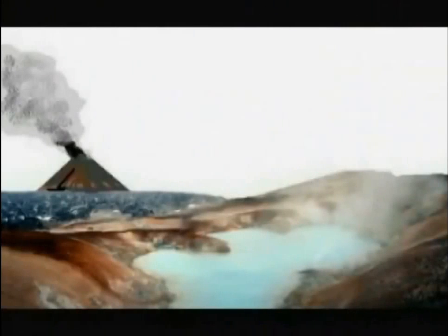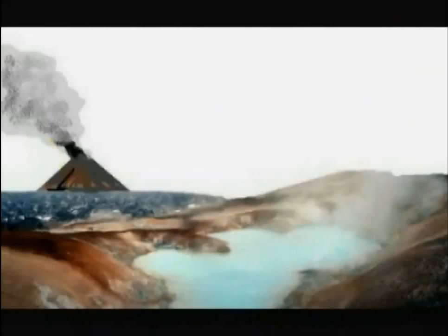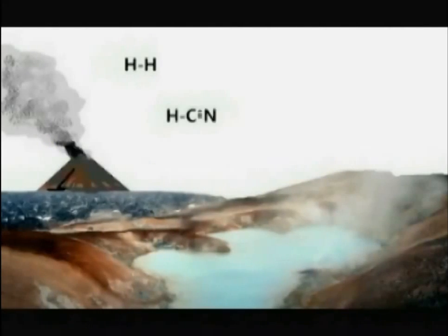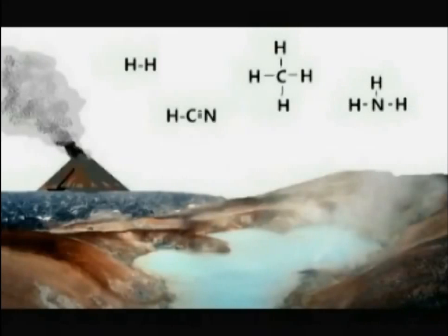The first step involves looking at the primordial earth 3.7 billion years ago. There it is — mostly wet, very warm, and with an atmosphere composed of all sorts of gases: hydrogen, hydrogen cyanide, methane, and ammonia among them.